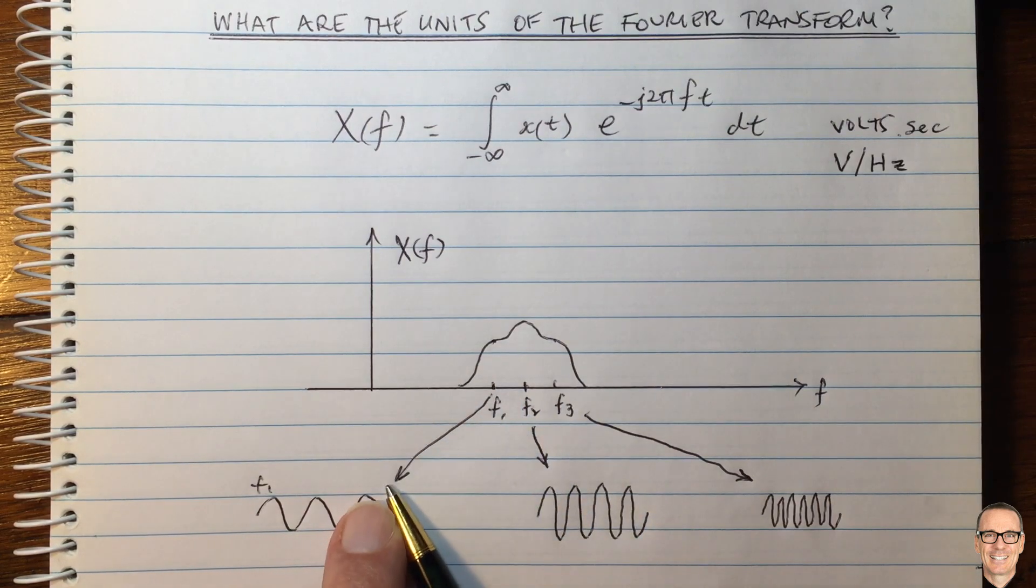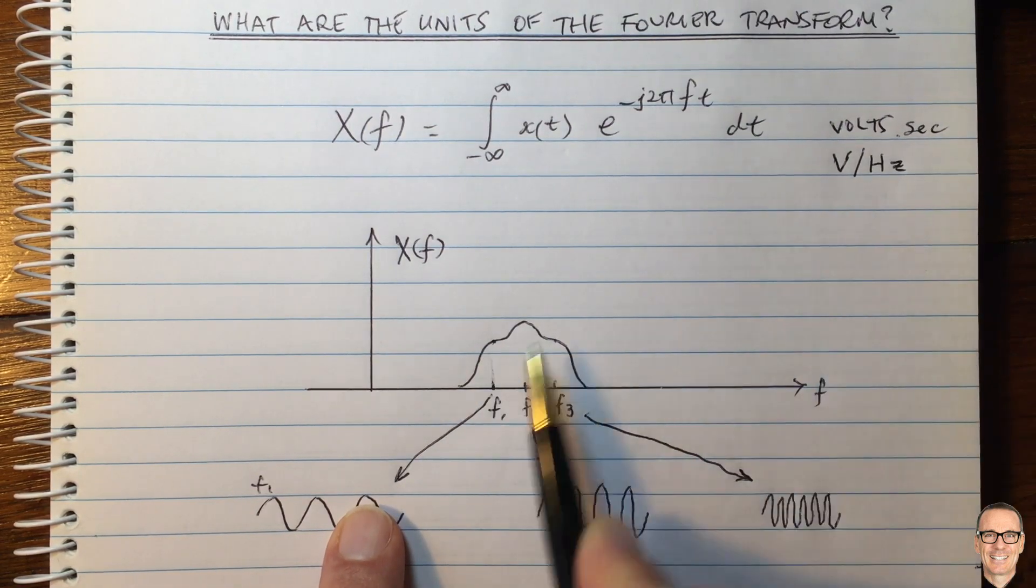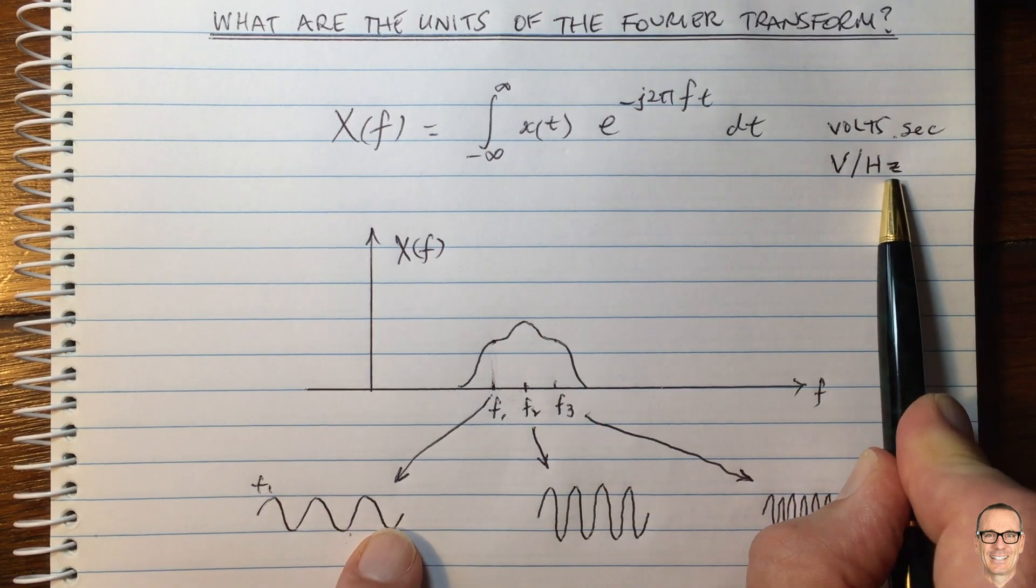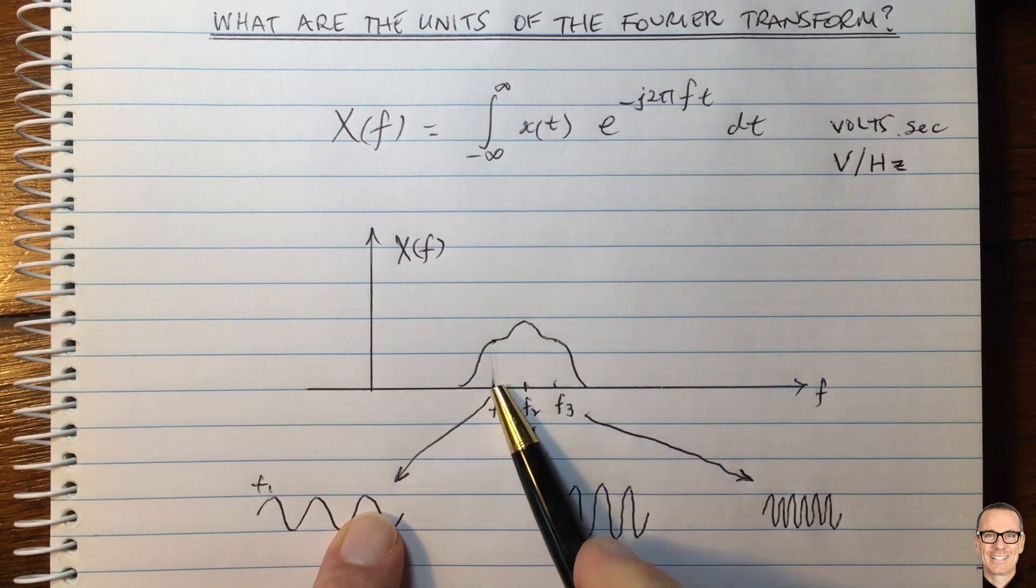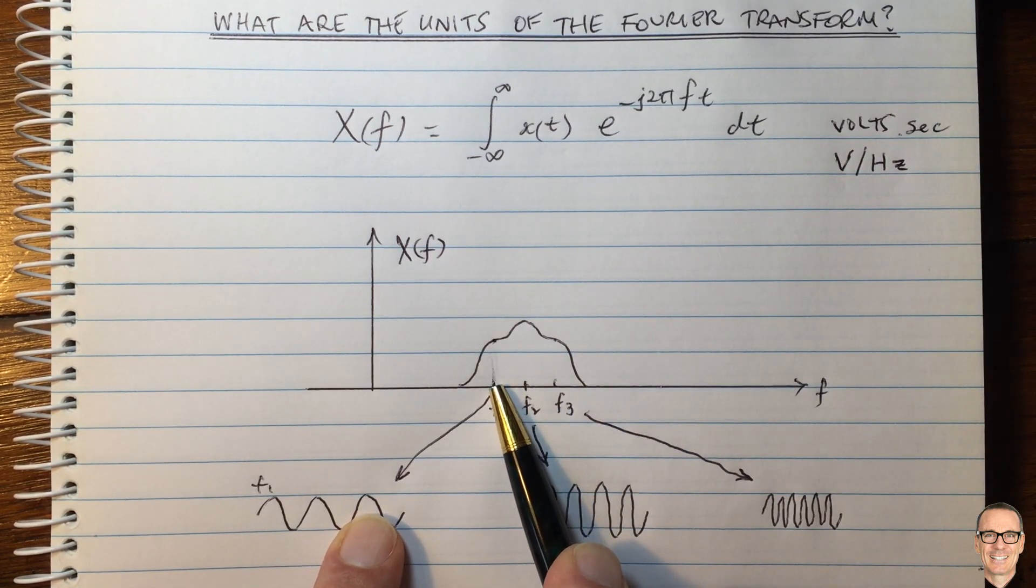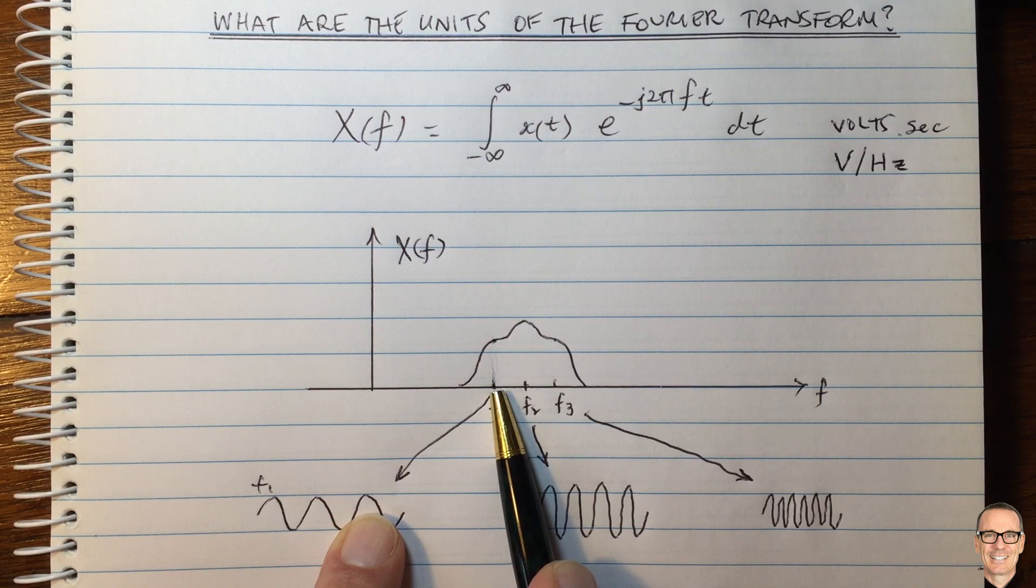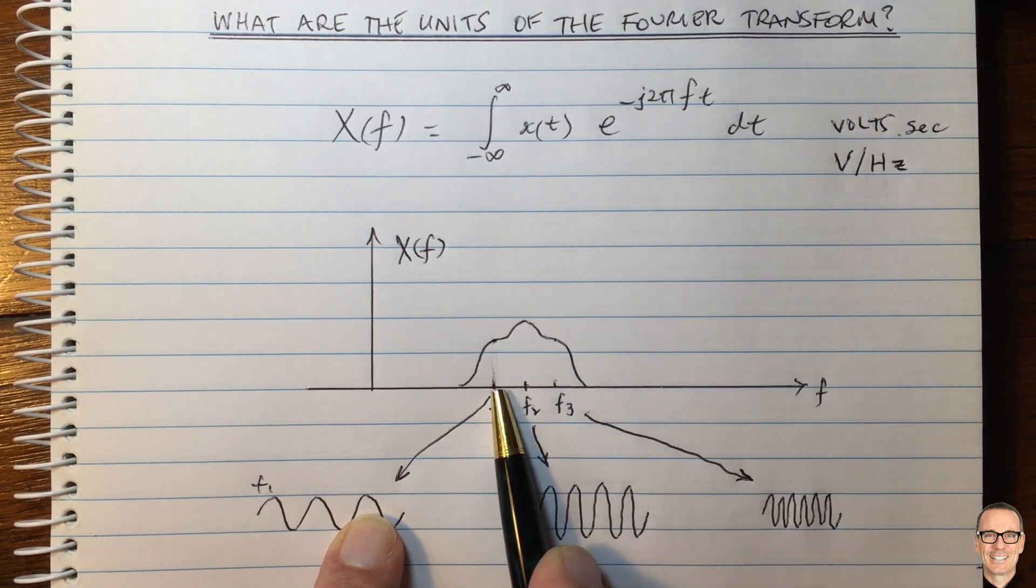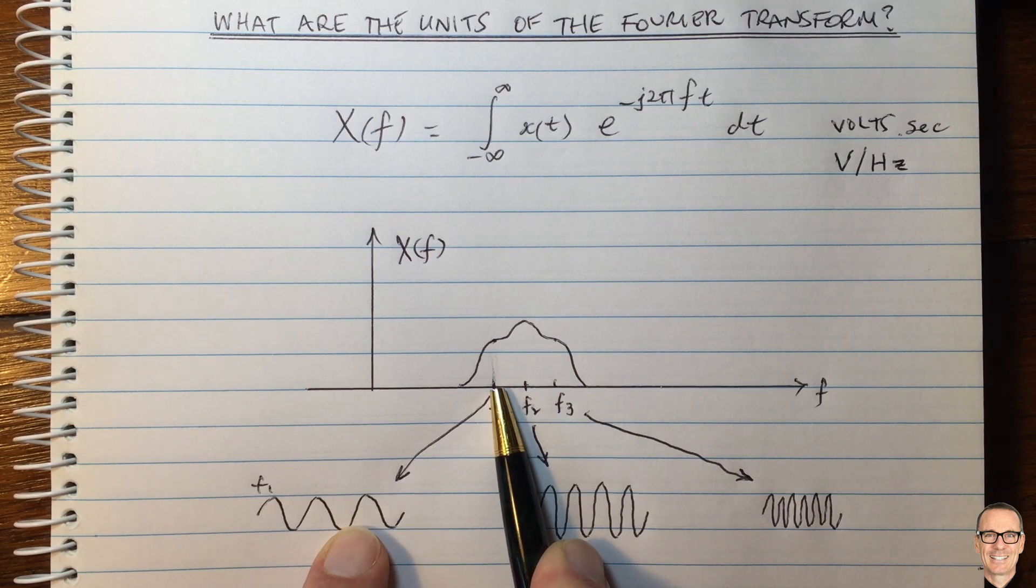It has to be that this amplitude represents volts over a certain frequency range. If we're looking at an exact frequency, then the frequency range is, in fact, zero, and the contribution would be zero, because volts per hertz. If there's no frequency range, if it's zero, then you've got zero volts.